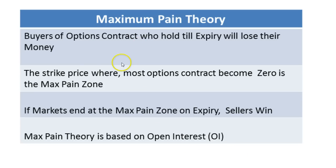As everyone knows, buyers of options contracts — if they just keep holding till expiry — the options contracts for most of the strike prices will become zero. Buyers will tend to lose as they keep holding the contract till end of expiry, and sellers will try to make use of this situation.